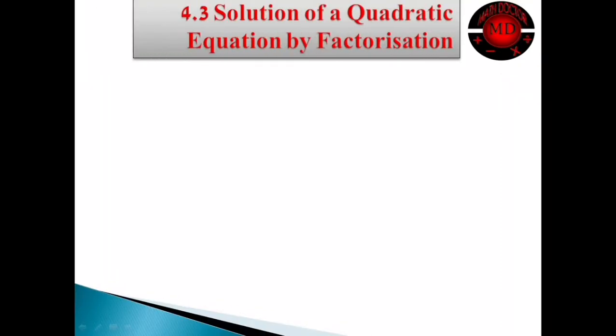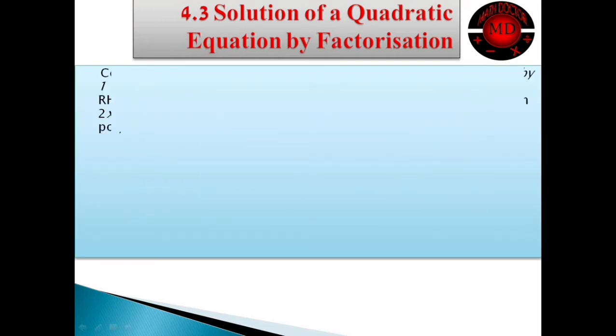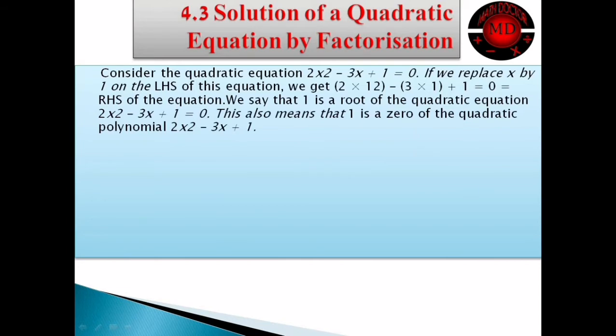Hello guys, welcome to all of you. Let's begin with solution of a quadratic equation by factorization. Consider the quadratic equation 2x squared minus 3x plus 1 equals 0. If we replace x by 1 on the left-hand side of this equation, we get: